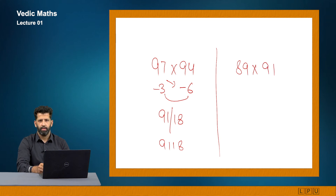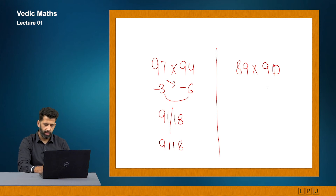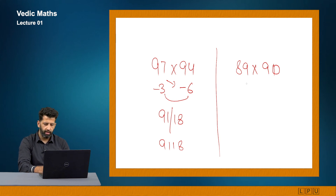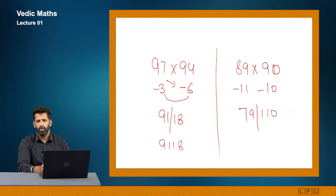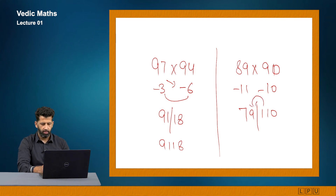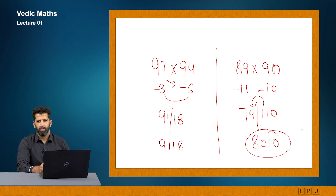Let us try 89 × 90 using base method. Differences are minus 11 and minus 10. So 89 minus 10 gives 79 (left part). On the right-hand side: 11 into 10 gives 110. Since 110 has 3 digits, I add the leftmost digit 1 to the left side. So 79 plus 1 gives 80, and the right side is 10. My answer is 8010.